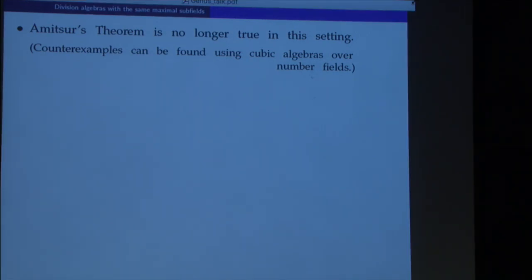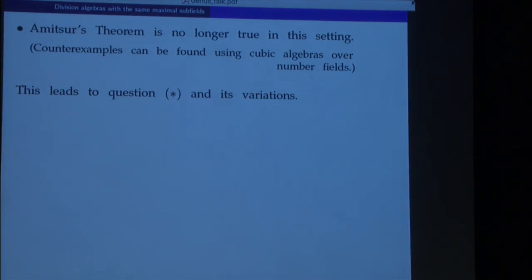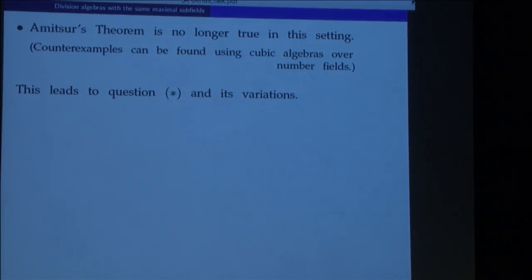In order to understand what really happens, one is led to consider this question and its variations. The counterexamples use local invariants and the Albert-Hasse-Brauer-Noether theorem — you can construct algebras ramified at four places with invariants 1/3 and -1/3, shuffle them properly, and get counterexamples.